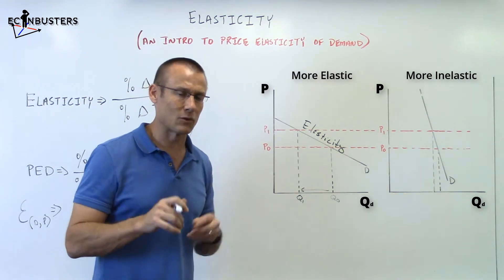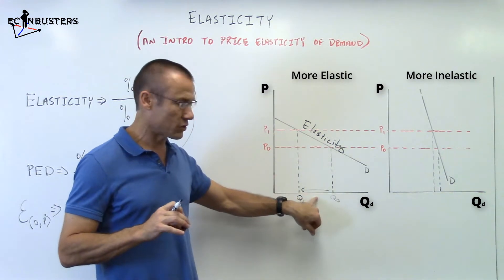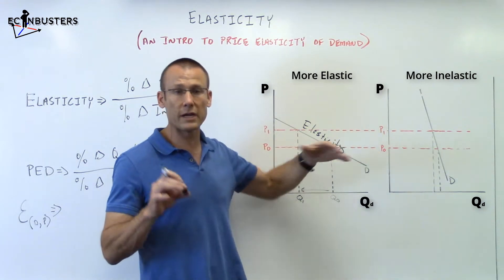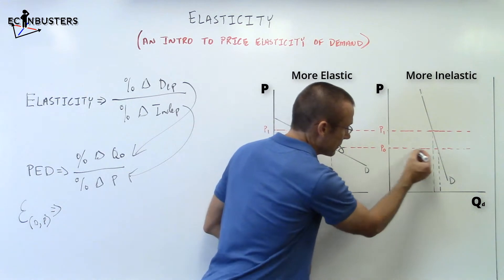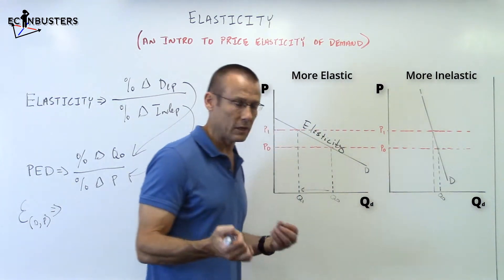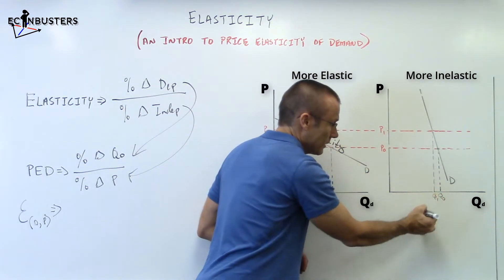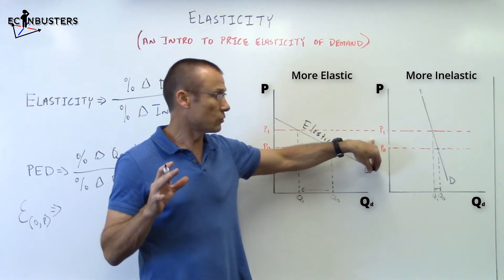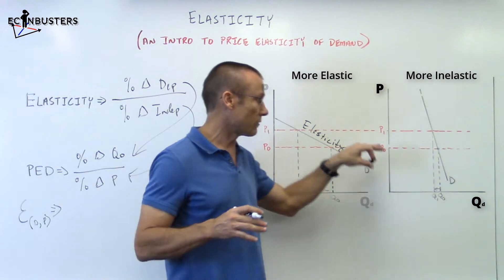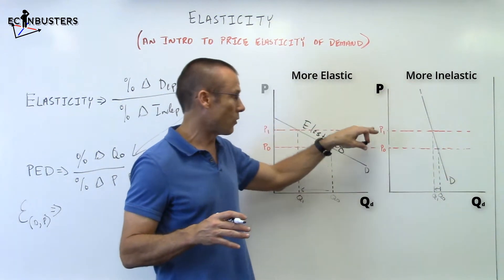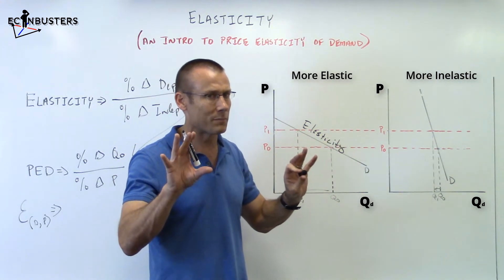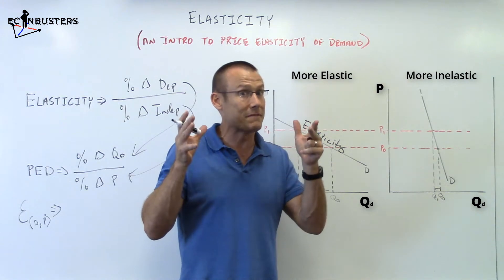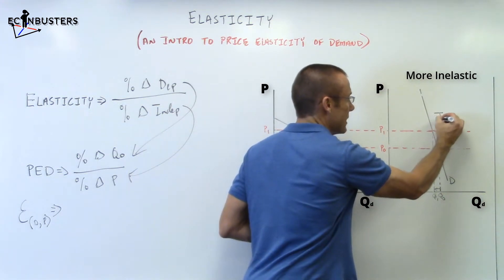It's always key to say percent changes because elasticity is not slope — that's another video. Now with the same percent change in price on the steeper curve: at P0 we get Q0, and at P1 we get Q1 — but the quantity demanded did not change very much. The percent change in QD was pretty small relative to the percent change in price. The steeper the demand curve over an equivalent percent change in price, the more inelastic it is.